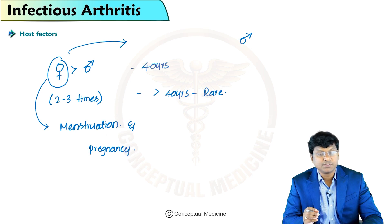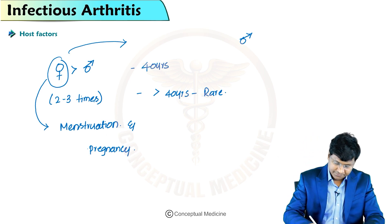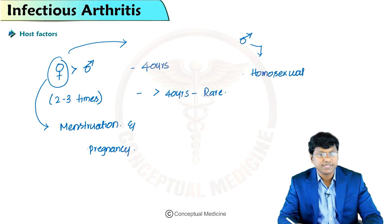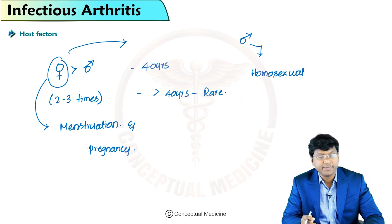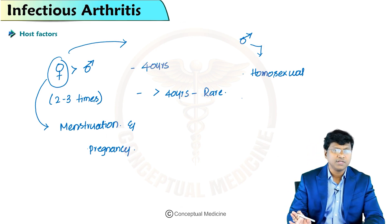In men, gonococcal arthritis is more common in those who have intercourse with men. Homosexual men with a high incidence of asymptomatic gonococcal pharyngitis and proctitis are predisposed to disseminated gonococcal infection.